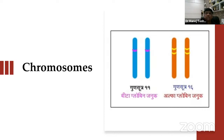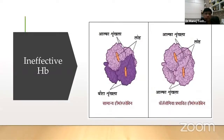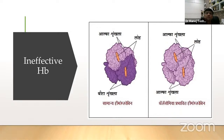Considering this, let us look at ineffective erythropoiesis — that is what the problem is. Usually, normal hemoglobin contains four chains, alpha and beta. That is why normal hemoglobin has four iron molecules and four globin chains.